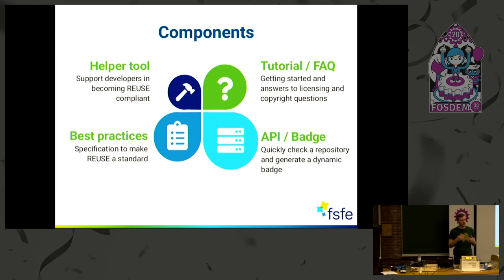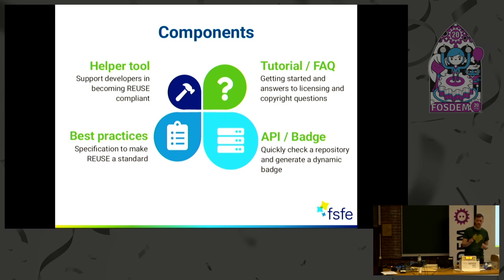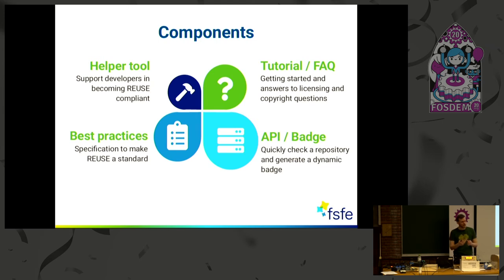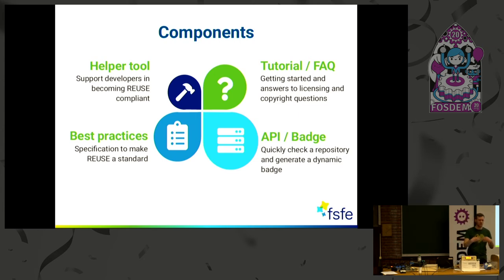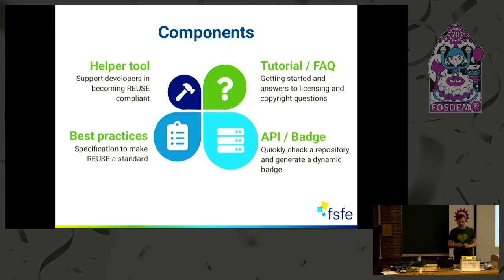With the Reuse API you can quickly register your free software project — any Git repository, whether it's on GitHub, GitLab, or some other independent Git platform. You can see whether it's already Reuse-compliant. It will create a dynamic badge that you can include in your README file so people can see the result of the Reuse check. If you reach compliance, the badge will always show that. If not, it will show that too. Really transparent and easy to start with.